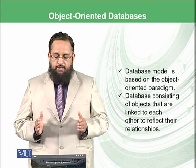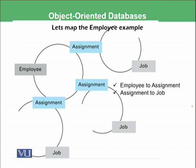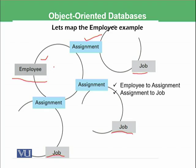The database model is based on the object-oriented paradigm. Let's map the employee example in this slide. There is one employee and three jobs available. The job object contains job-related things and the employee object contains employee-related things. The assignment object creates a link between the employee and the job. If you want to find which employee is assigned to which job, you traverse from employee via assignment to reach the job. Similarly, if you want to see which assignments have been given for a particular job, you can traverse in reverse order.